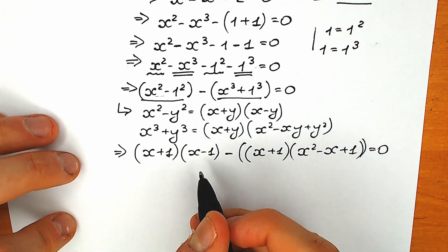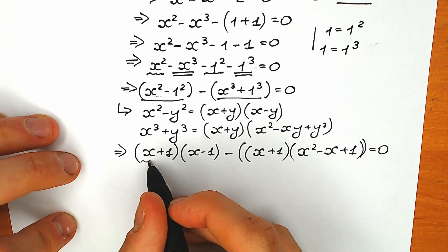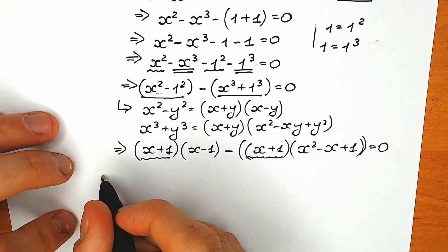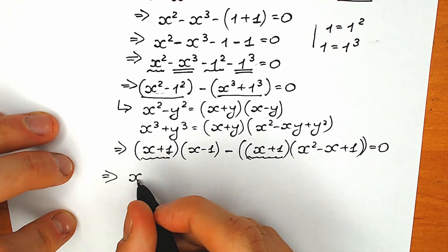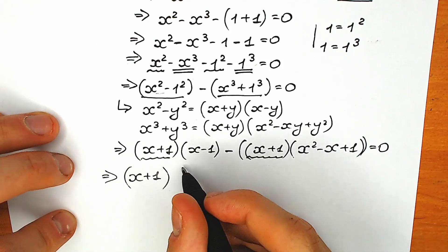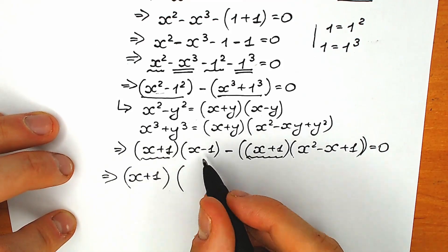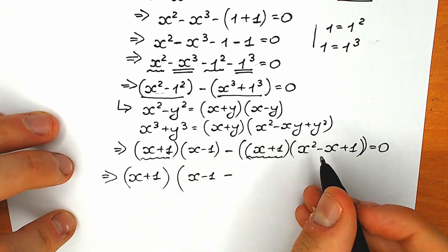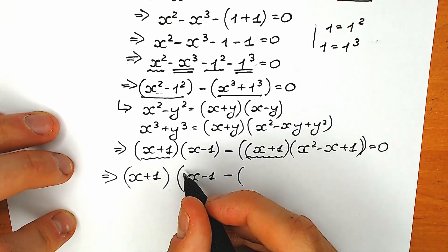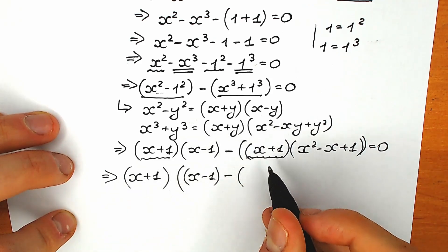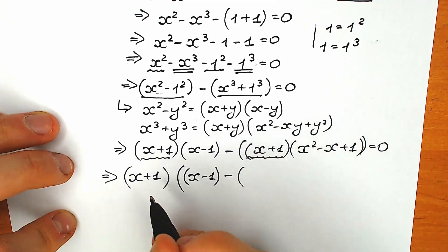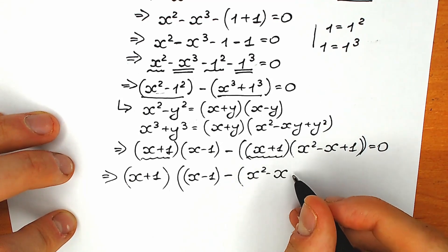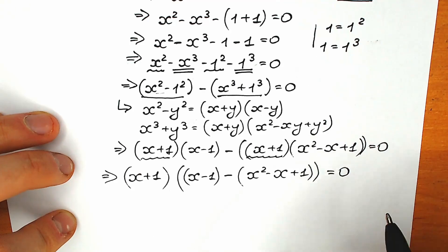If you look closely, we have (x plus 1) in both terms, so we can factor it out. As a result we have (x plus 1) times the quantity [(x minus 1) minus (x squared minus x plus 1)] equals 0.